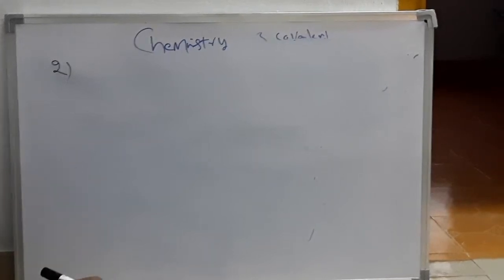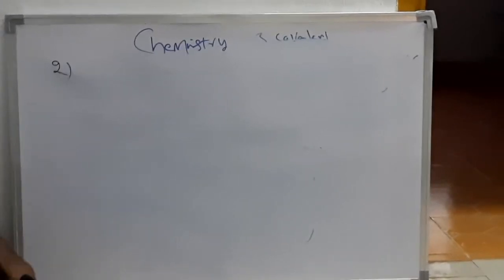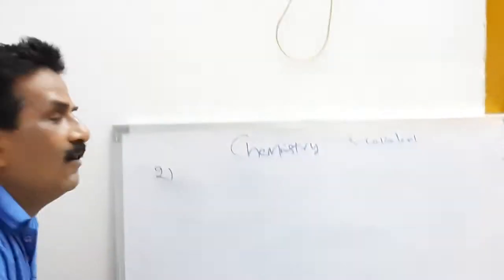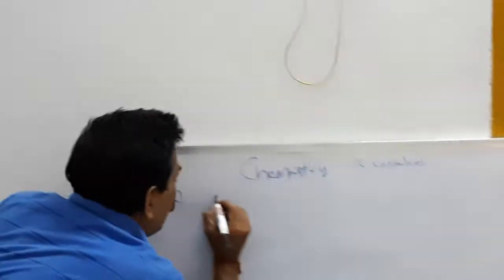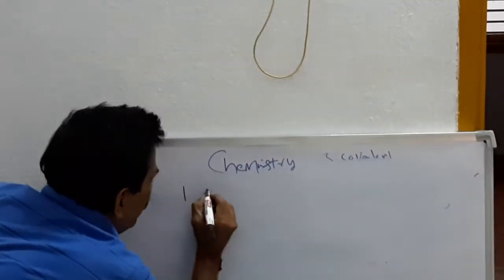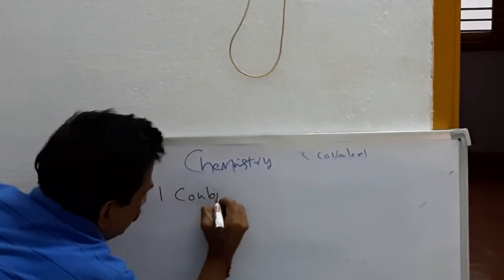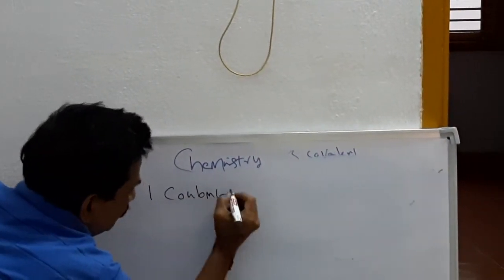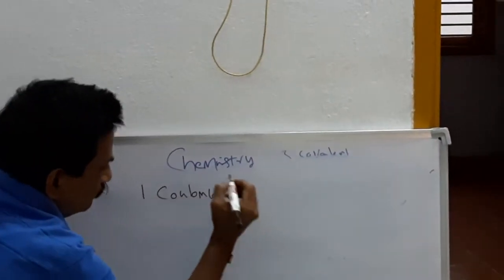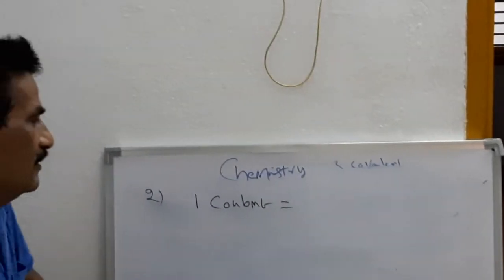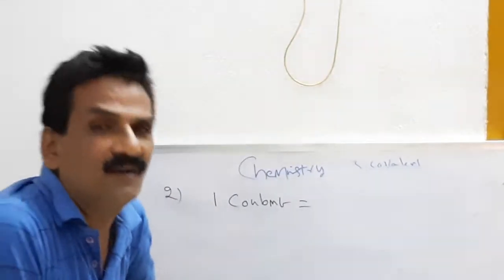The next question is from physics: one coulomb is equal to how many electrons?